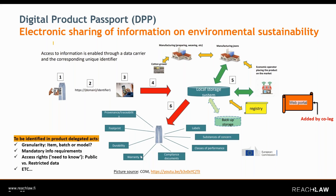What was added in the agreement by the co-legislators, comparing to the Commission proposal, was first of all the so-called web portal for digital product passports. This comes in addition to the DPP registry already foreseen in the Commission proposal, and the web portal will basically be a channel for stakeholders to access publicly available information about the products for which DPPs are required and available.